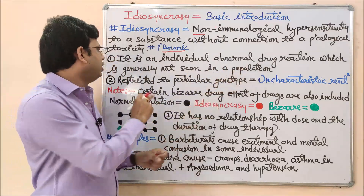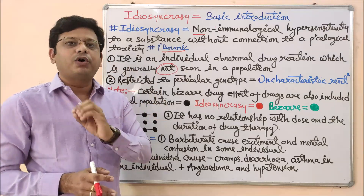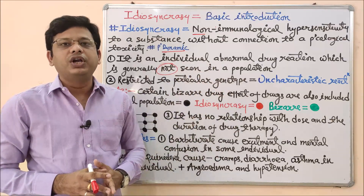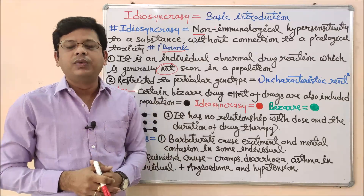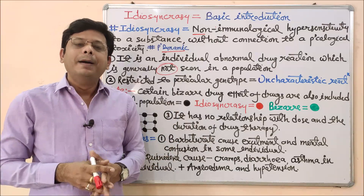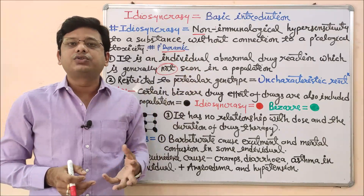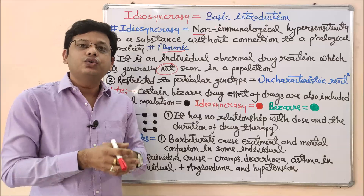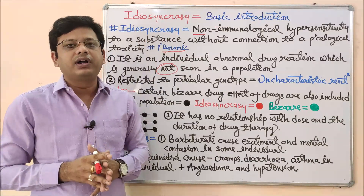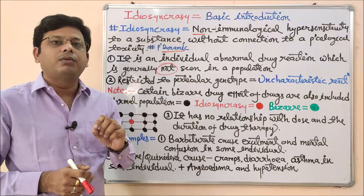Idiosyncrasy is an individual abnormal drug reaction which is generally not seen in the population. It is entirely the responsibility of that person's biology, and it is not a usual or commonly seen response. For example, if I give 20 students a vitamin C tablet, in perhaps 1 out of 100 people one student may show a hypersensitivity reaction not based on an immunological profile — showing abnormal activity compared to the other students. This is an idiosyncratic reaction, not related to drug dose or duration, but based on that student's genotype.